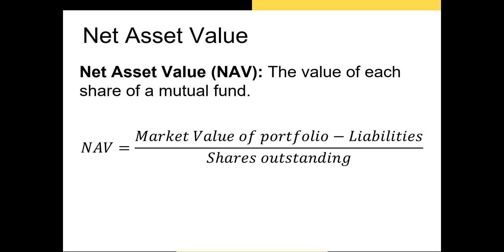Now let's talk about how you calculate the value of your investment in a mutual fund. The formula you see is for the net asset value, or NAV. The NAV represents the value of each share the mutual fund has issued to investors in exchange for their cash when they initially invested. The NAV is calculated by summing the total market value of the fund's portfolio, subtracting any liabilities the fund owes for labor or overhead, and dividing by the number of shares issued to investors. You can think of the NAV almost like the intrinsic value of mutual fund shares — what those shares should be worth based on the fair value of the underlying assets.